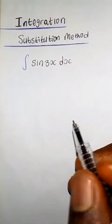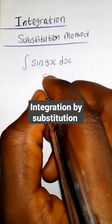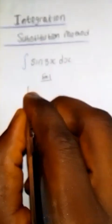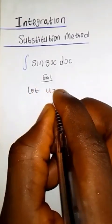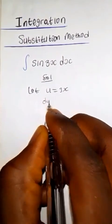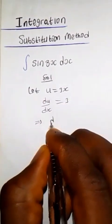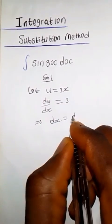How do we integrate this function using the substitution method? Solution: suppose we let u equal 3x. Now we differentiate u with respect to x. We have du/dx equals 3, which implies dx equals du over 3.